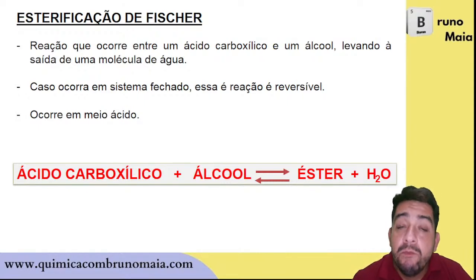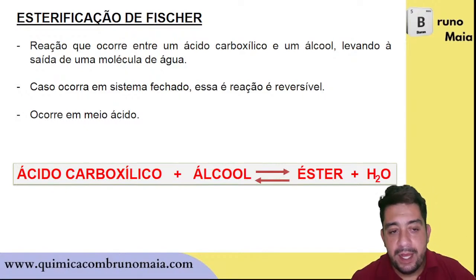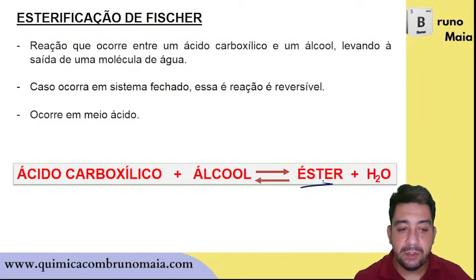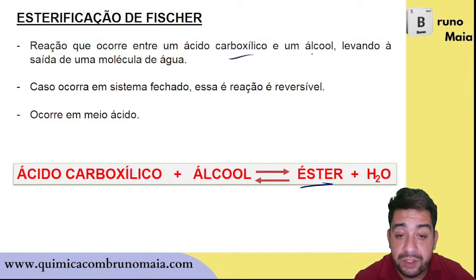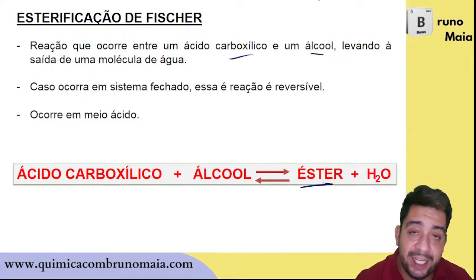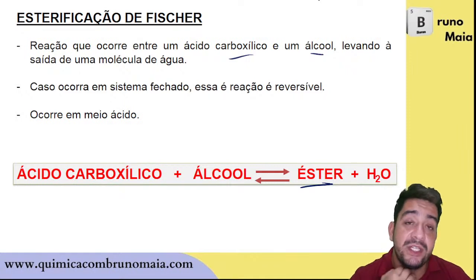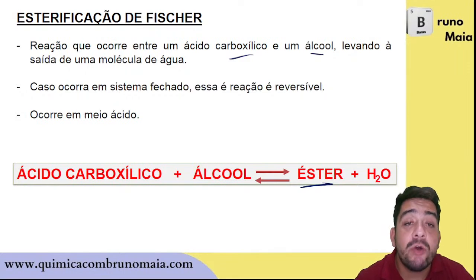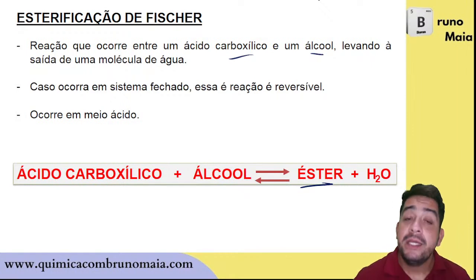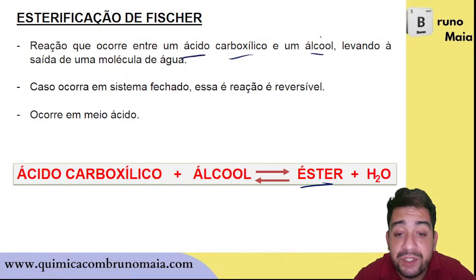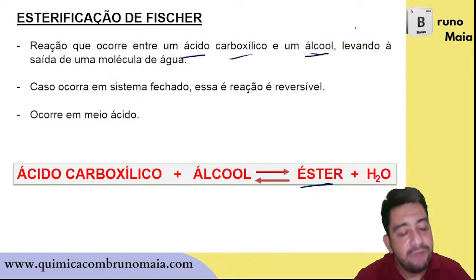Now comes a very important reaction: the Fischer esterification. Esterification is so named because it produces an ester; Fischer is the scientist who proposed it. It is a reaction between a carboxylic acid and an alcohol. Until now we talked about reactions that occur mainly in hydrocarbons — addition in alkenes, substitution in alkanes or aromatics. This is the first reaction in which we are using organic functional groups.